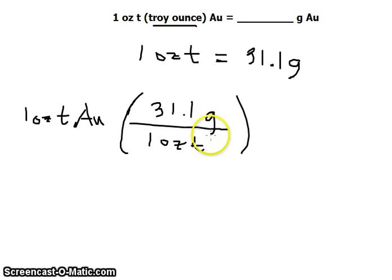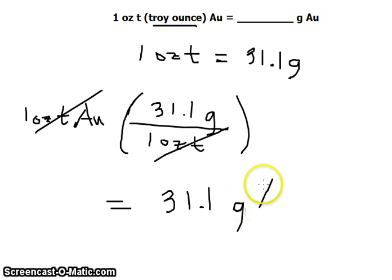We want the unit to be in grams, and then we cancel the troy ounce unit. So we get an answer that is 31.1 grams of gold. That's just pretty simple.